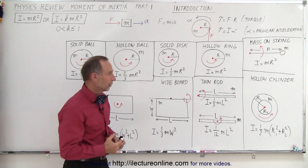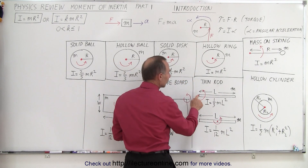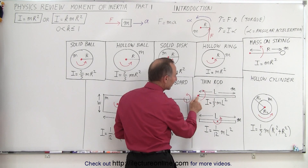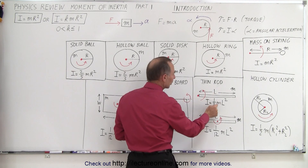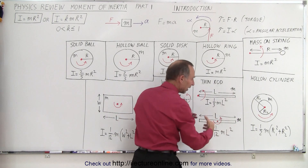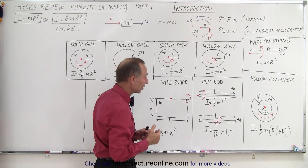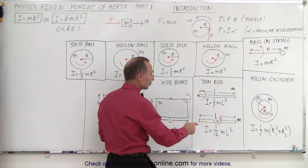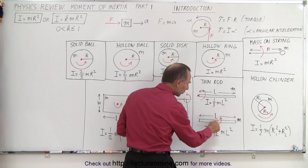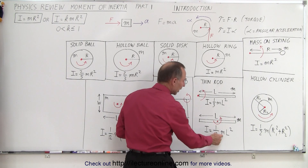What if we have a thin rod with length l and mass m? If the rod rotates about its end, then the moment of inertia is one-third ml squared. Notice that we use l here for the length, not r from the point of rotation to where the mass is located, so we simply use l instead of r. But if the point of rotation is right in the middle of the rod, at the center of mass, then the moment of inertia is one-twelfth ml squared.